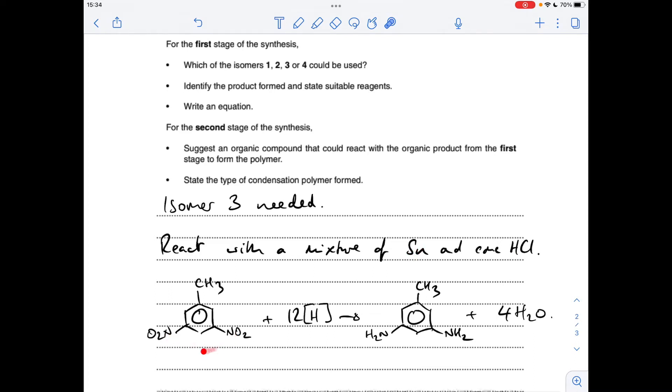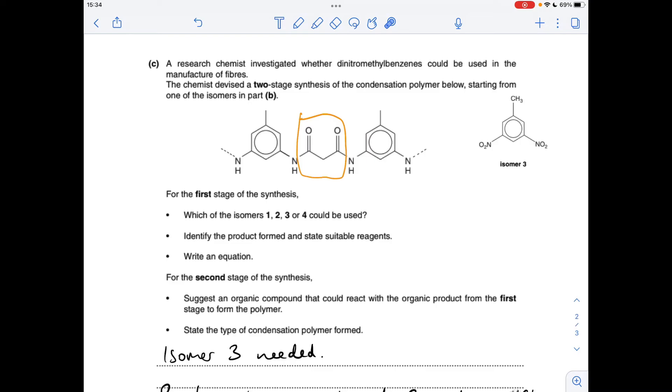Each reduction generates two moles of water, so we're going to get four. Going back to the structure of the polymer to get the second stage sorted.